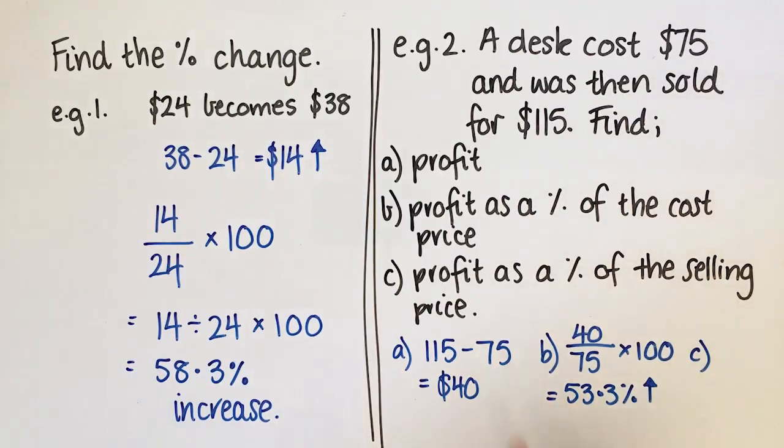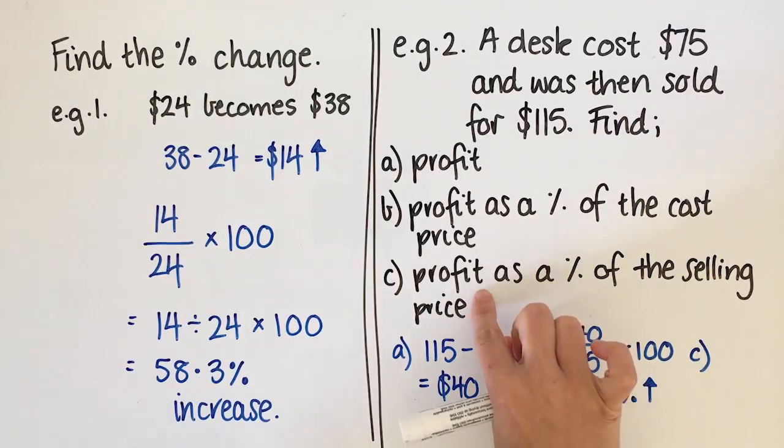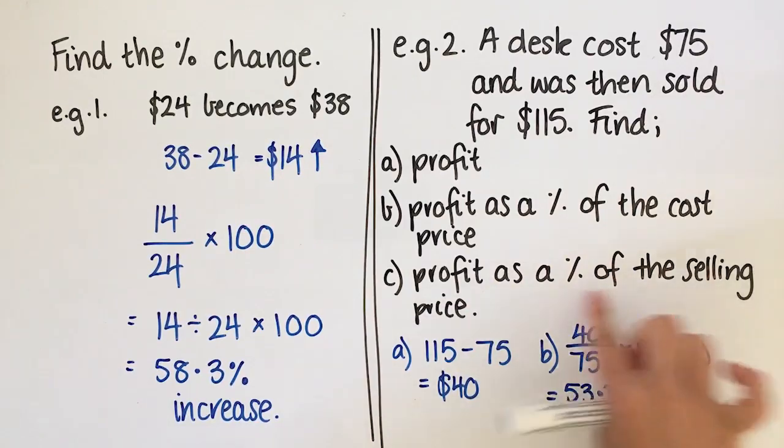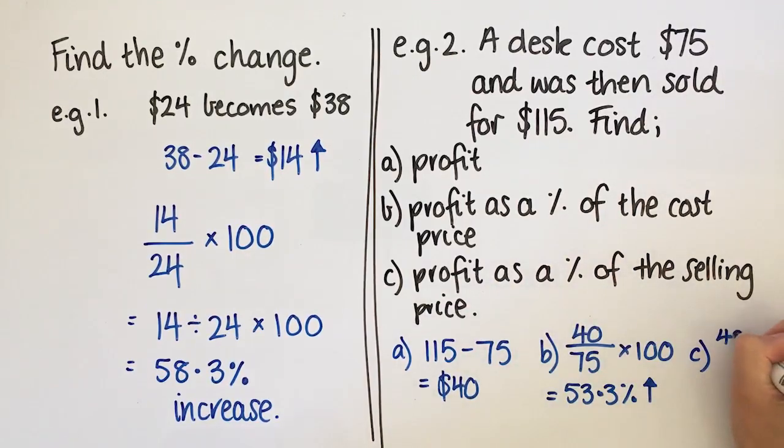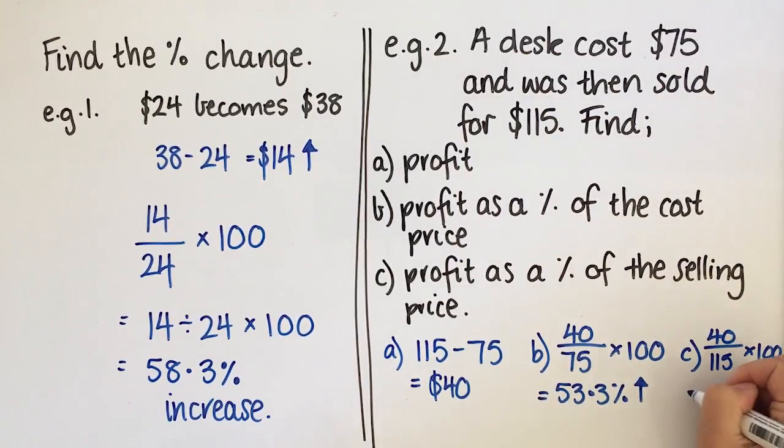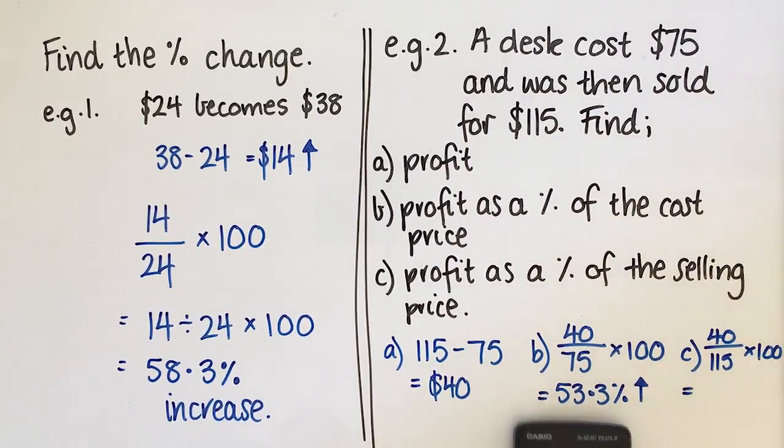And the last thing we're told to do is find the profit as a percentage of the selling price. So the profit is still 40, but this time we're doing it out of the selling price. We're still going to times by 100. So then I'm going to go 40 divided by 115 times 100. That's 34.8%.